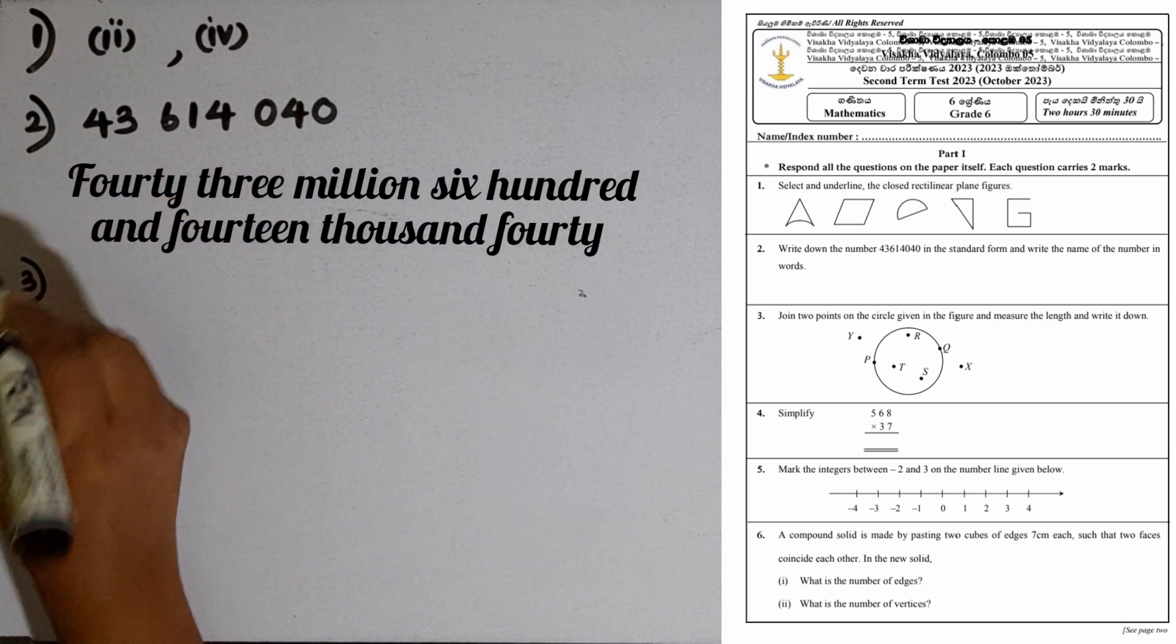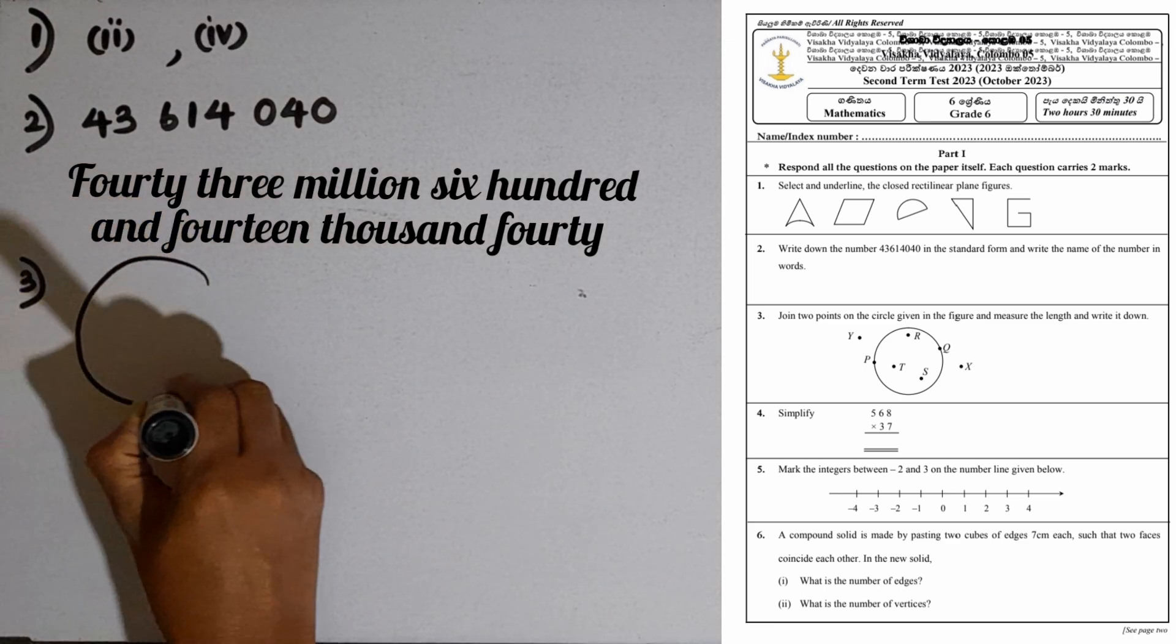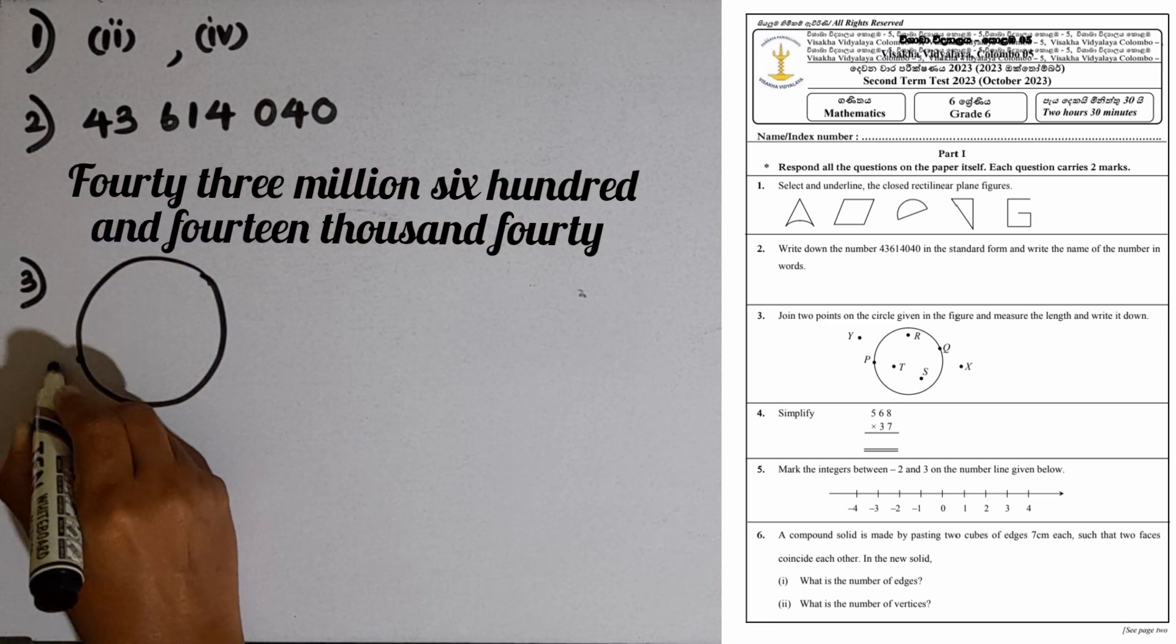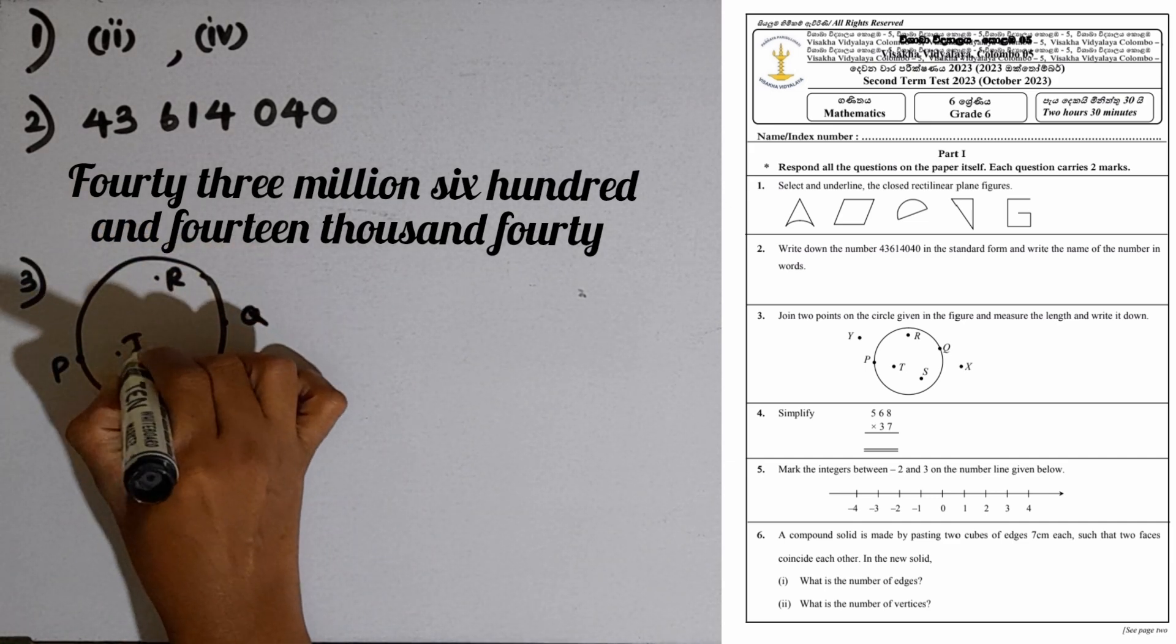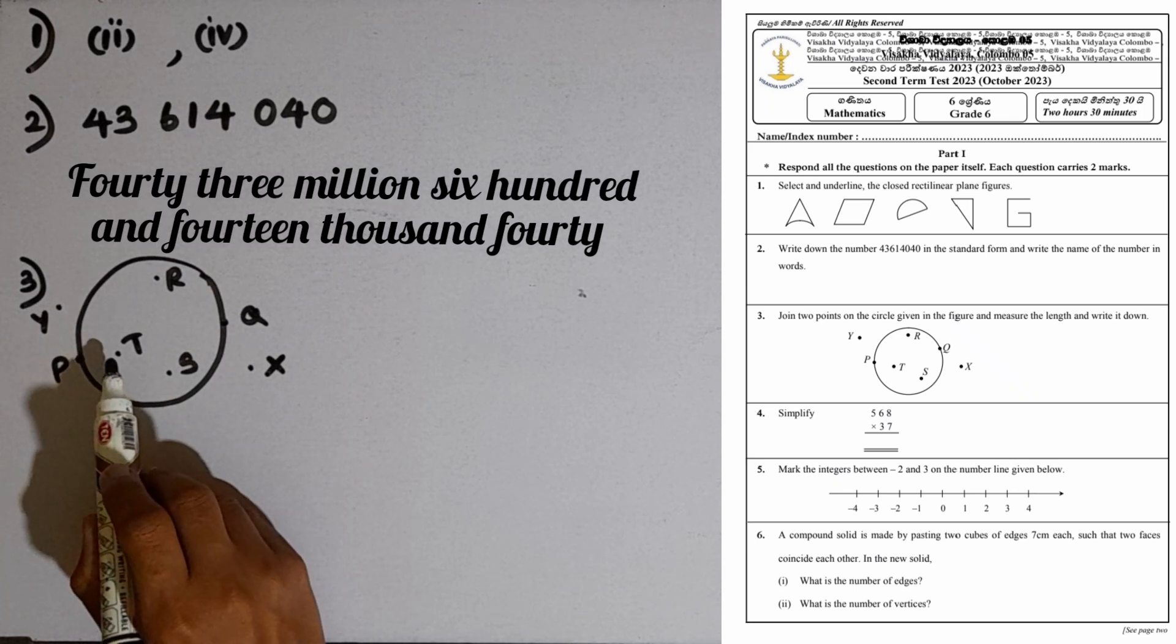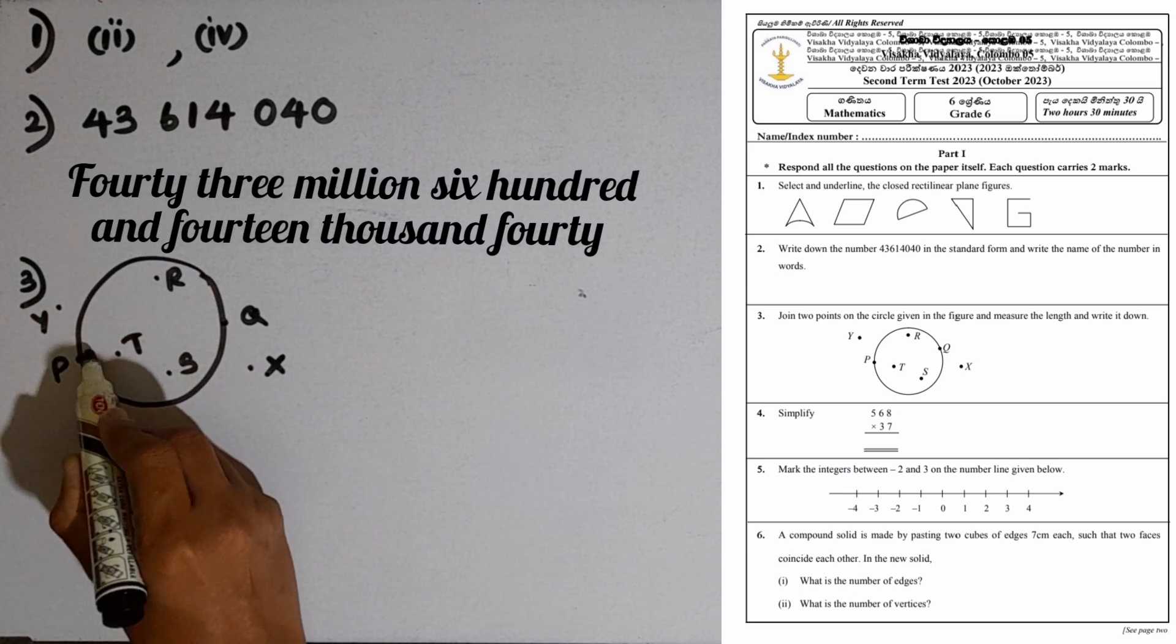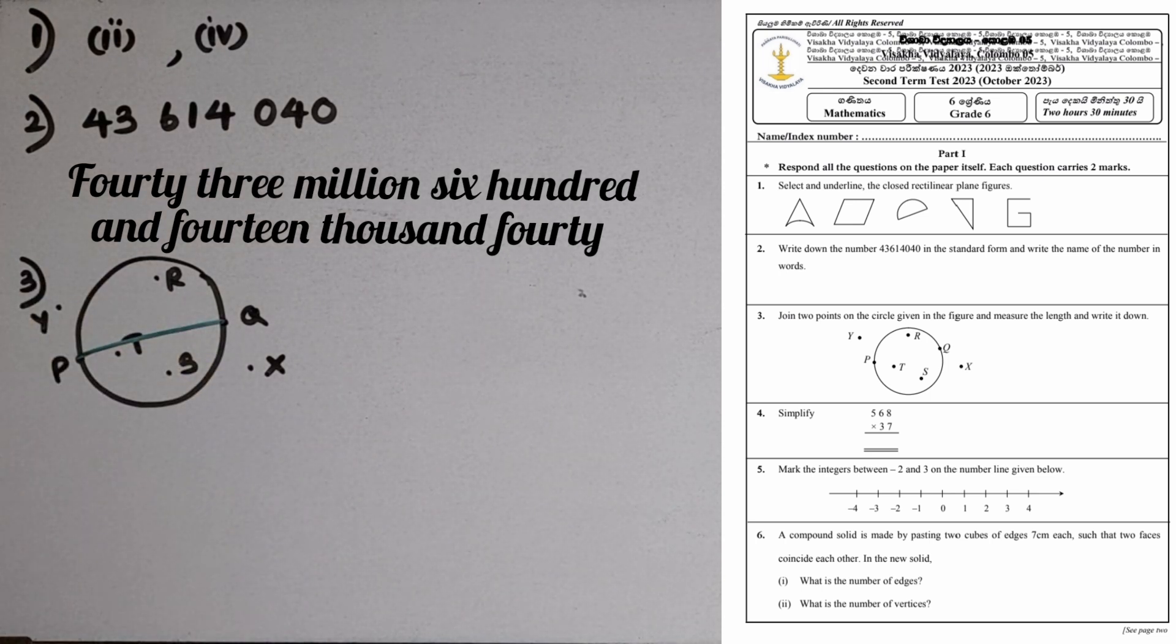Number three: Join two points on the circle given in the figure and measure the length and write it down. We are given the figure with points P, Q, R, T, S, Y, and X. The only two points on the circle are P and Q. You have to join these two points and measure this distance by using a straight edge.